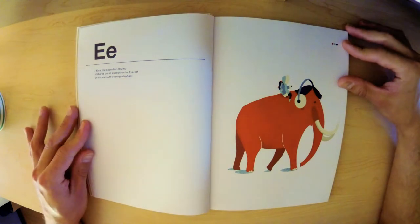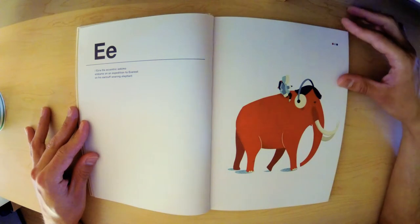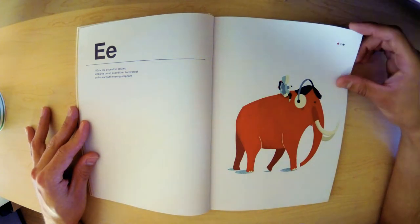E. Ezra the eccentric Eskimo embarks on an expedition to Everest on his earmuff-wearing elephant.